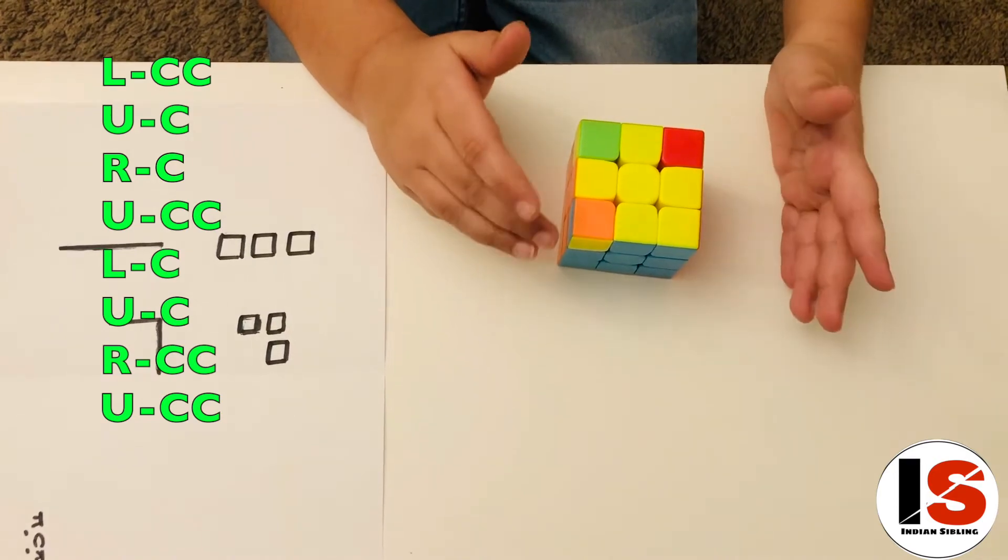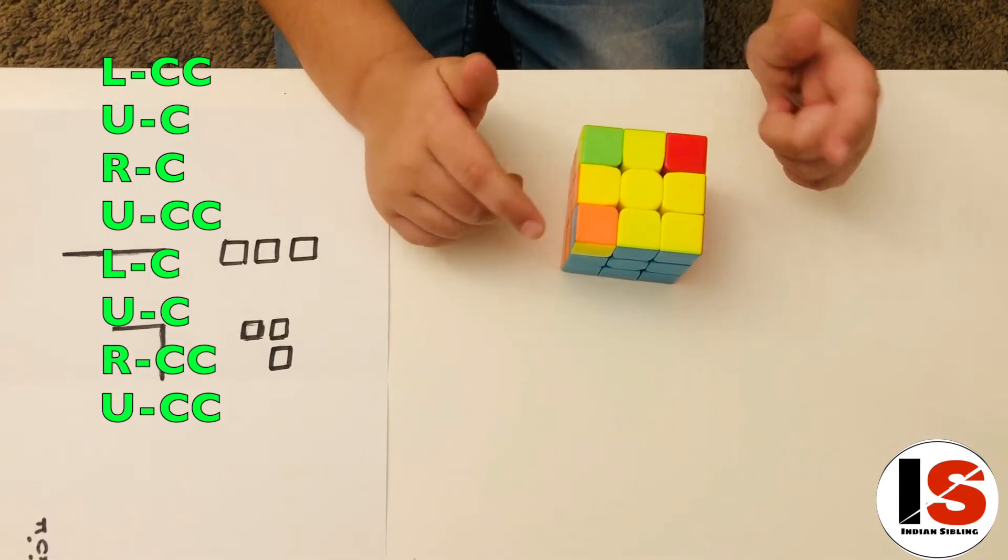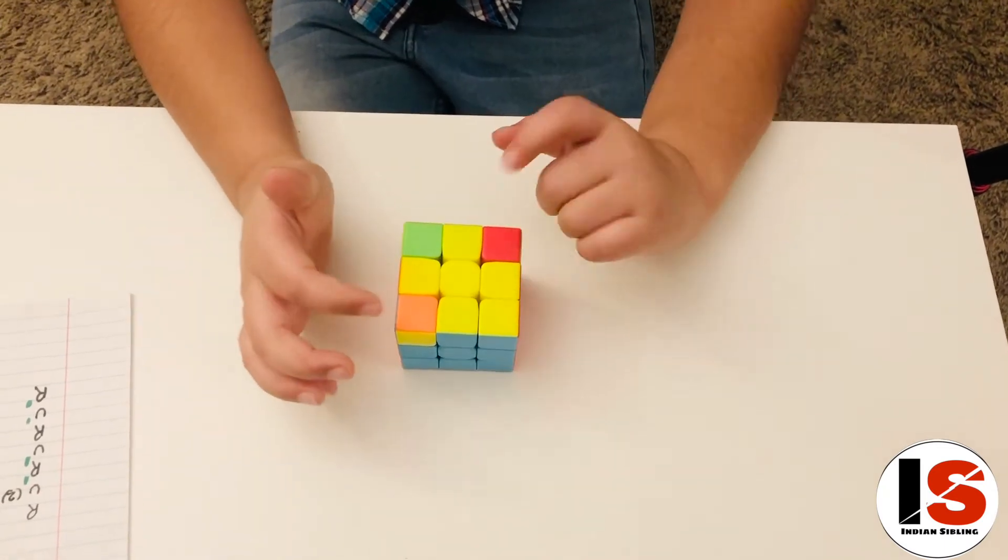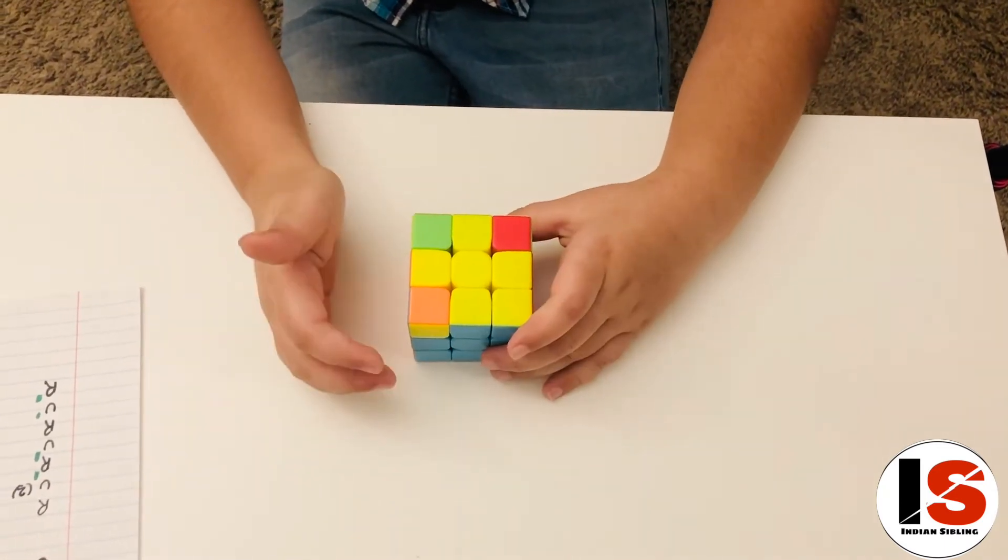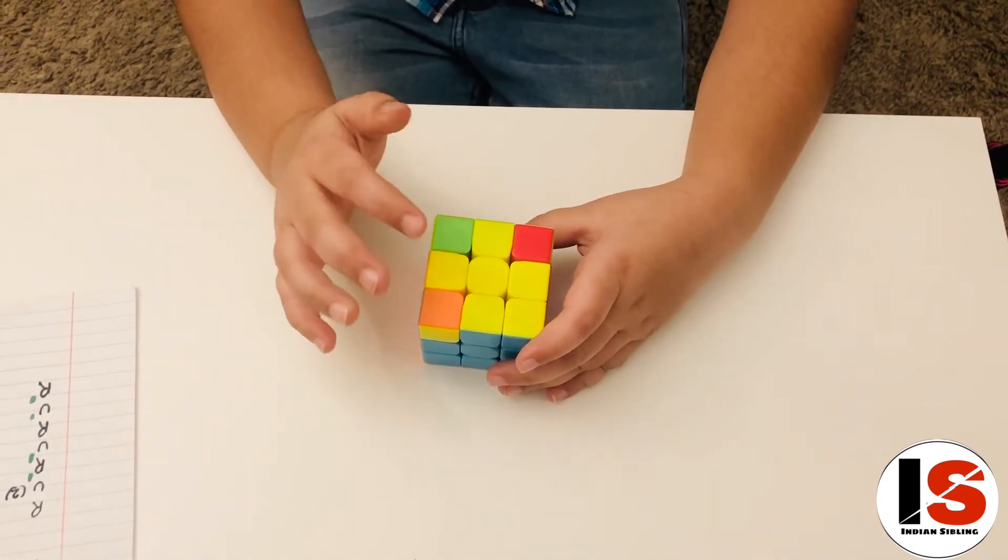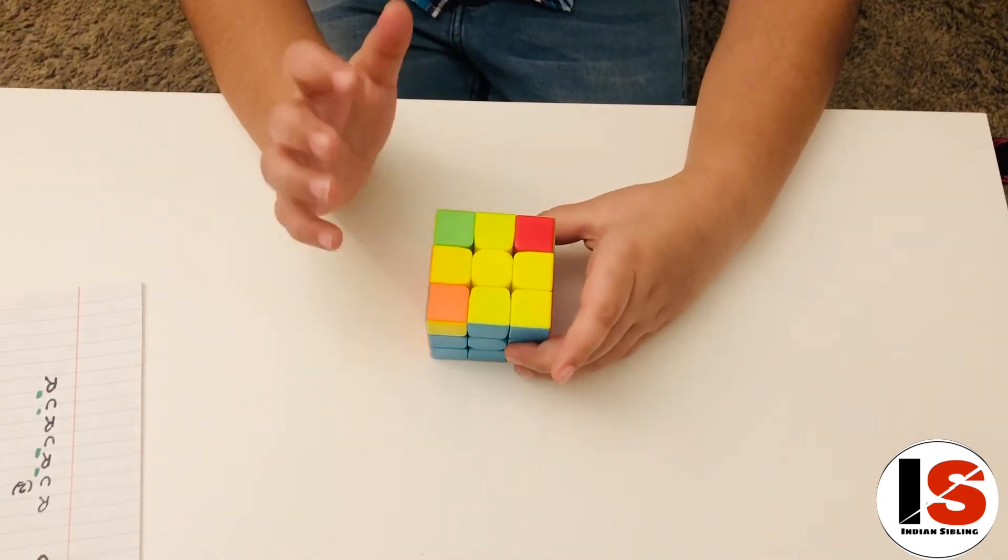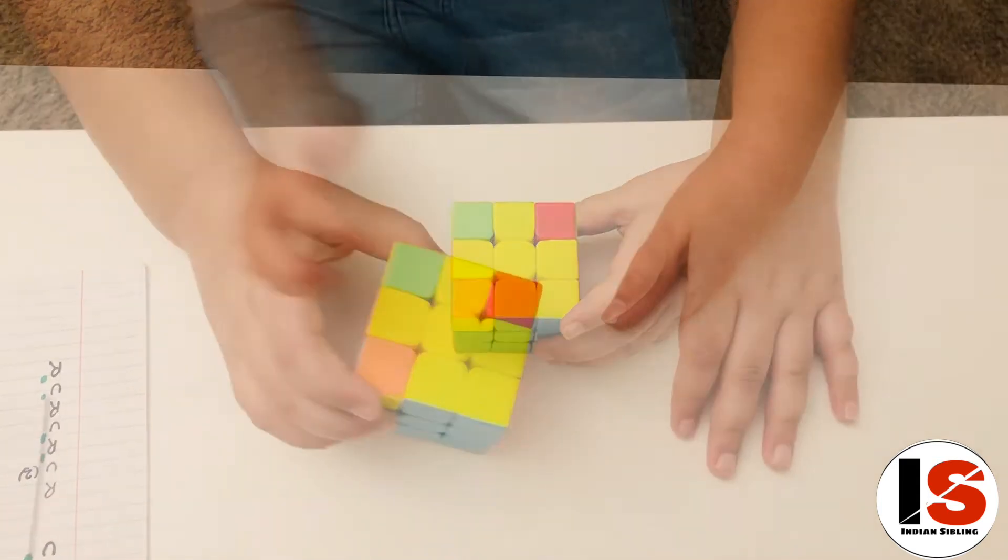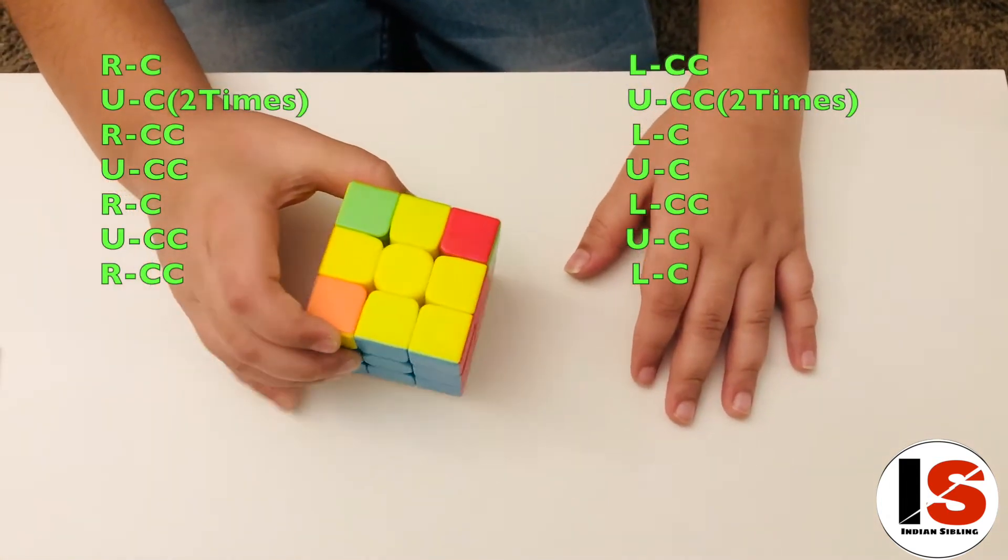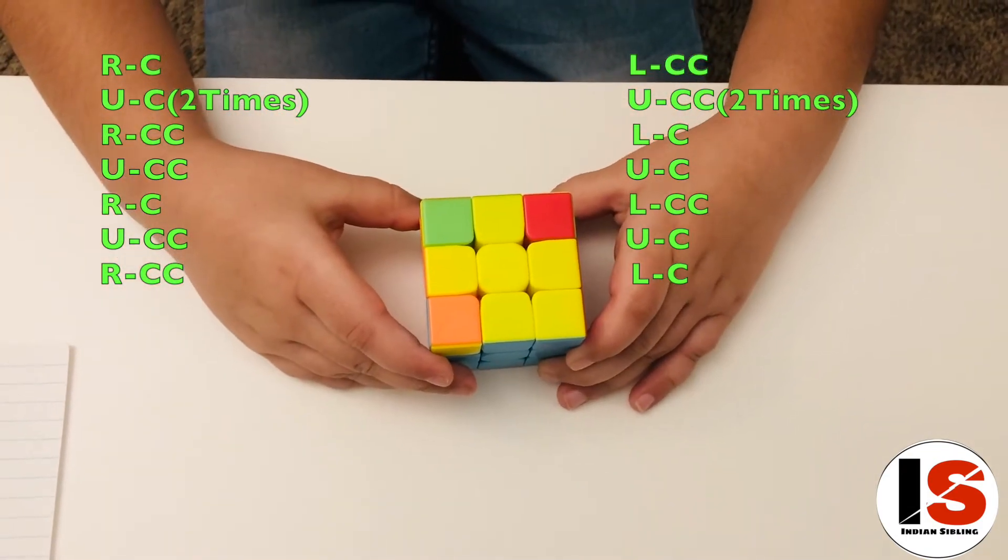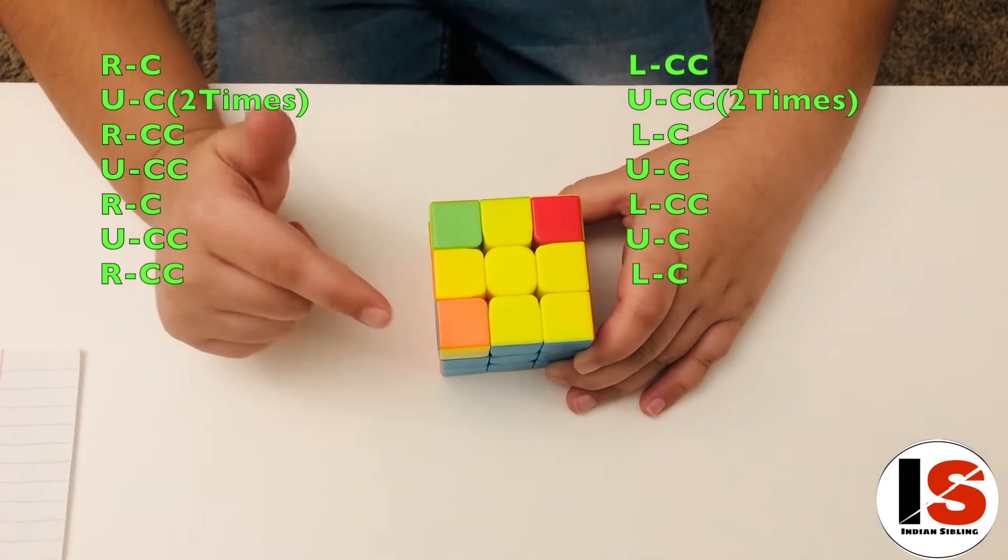I'm going to show you the algorithm to get the right corners in the right place. Now we are on our final step to orient the corners. Getting the right corners, we would be on the last step orienting the corners. In order to solve this, we have two algorithms, one for the right and one for the left. You do the right one first and then the left. You have to face the ones that are not solved on your right. Now first you have to do the right, then you have to do the left together.